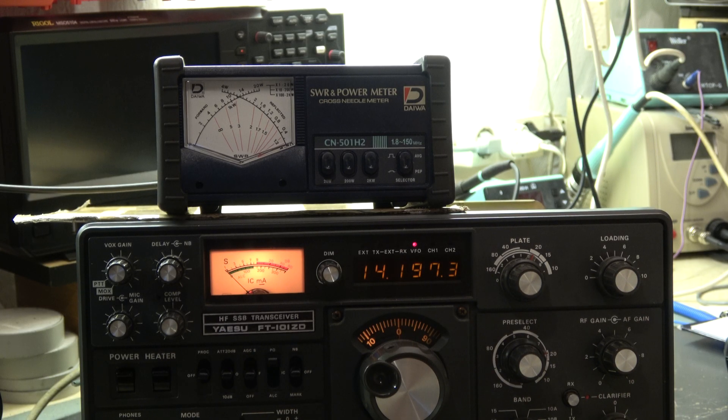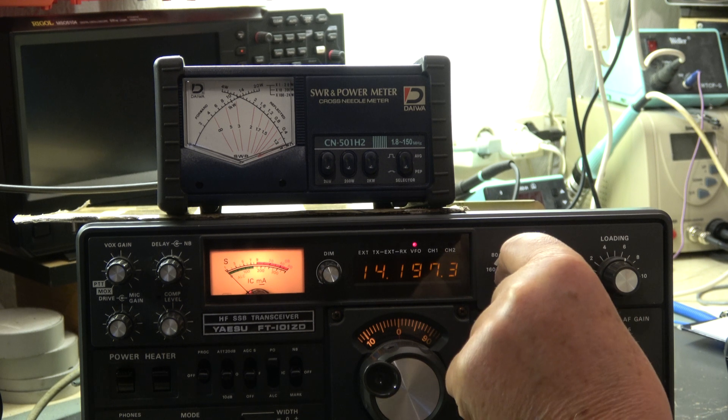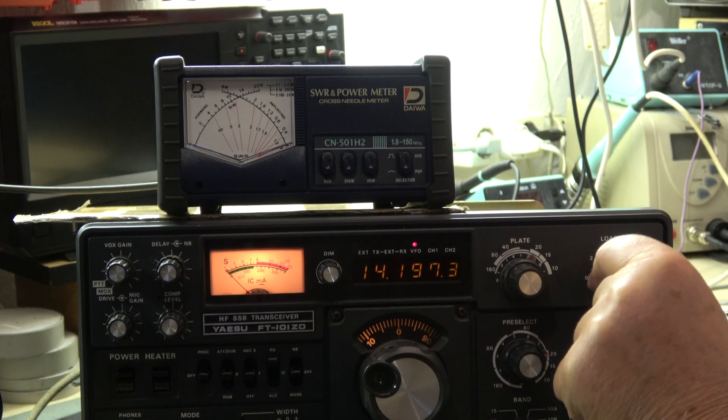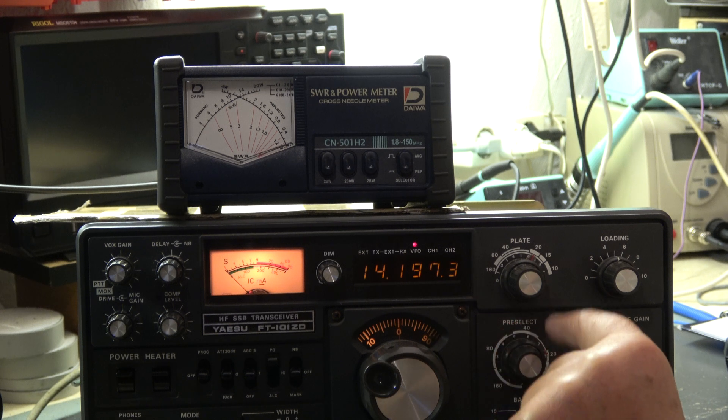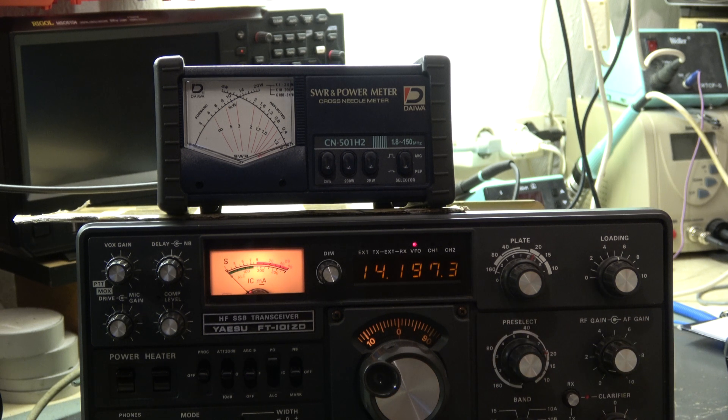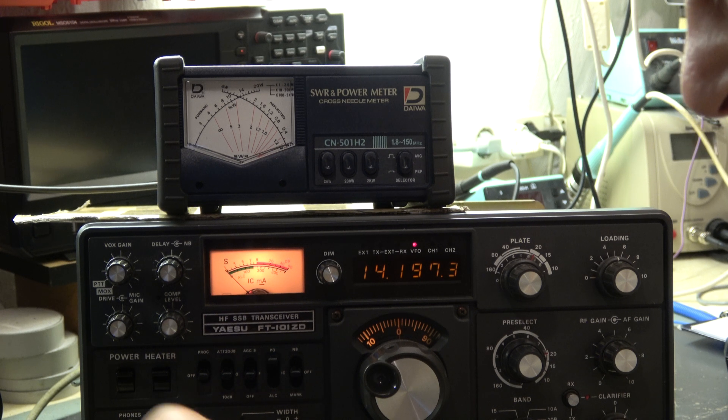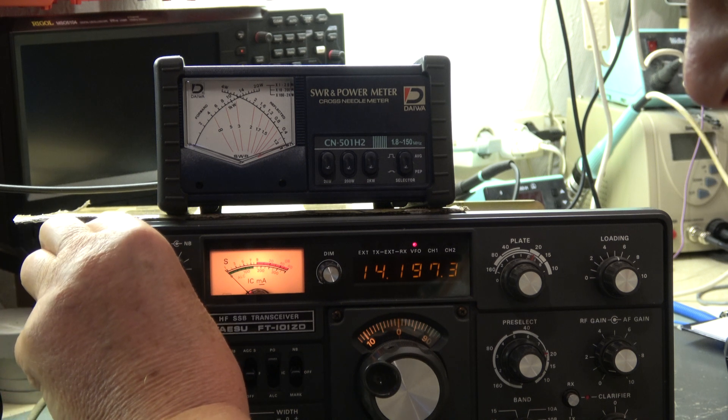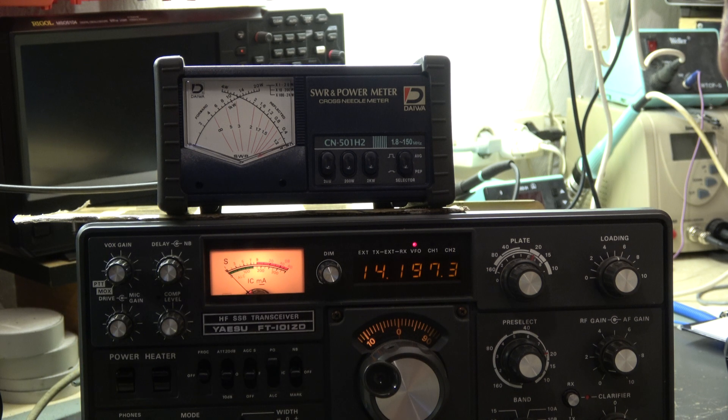Here we have the setup for tuning: output power meter, full scale 200 watt, connected to a dummy load 50 ohm. We will try now to tune the transceiver on this frequency. We're on the 20 meter band, 14 megahertz. The plate is roughly set to 20, loading is in the range of center also. Pre-selector, which is also the driver, is set to 20 plus minus. We are in mode tune.